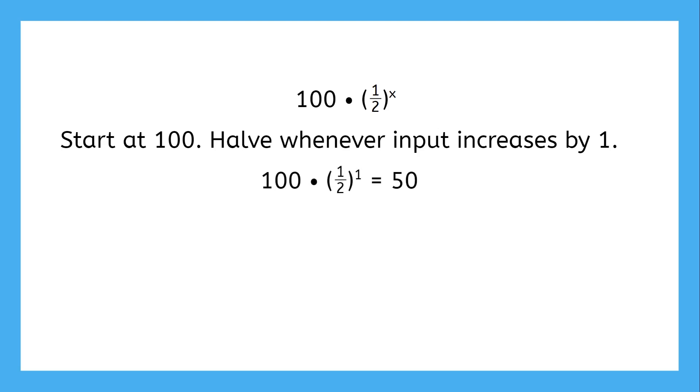Let's look at an easy example of exponential decay. One hundred times one half to the xth power. First, notice that the growth factor is smaller than one. This is a telltale sign of an exponential decay function. We can interpret this function to mean that it starts at one hundred, then continues to halve whenever the input increases by one. Now, half of one hundred is fifty, half of fifty is twenty-five, half of twenty-five is twelve-point-five.